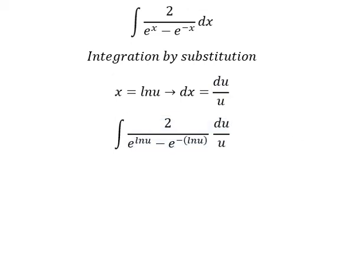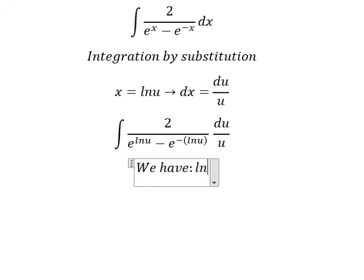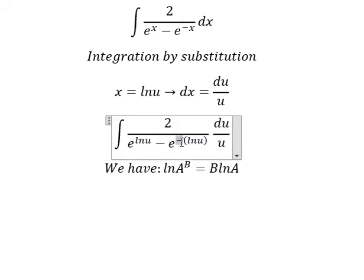Next, we have the formula: ln(a) to the power of b equals b times ln(a). So b in here is negative, and I will put the negative inside the natural log.